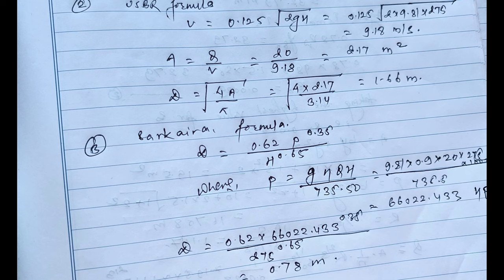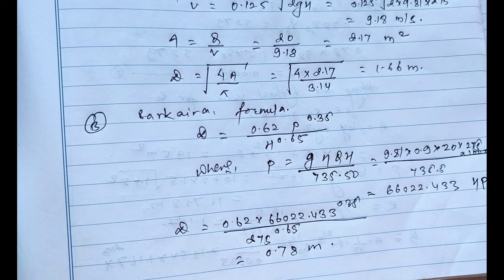So we calculated the economic diameter using different formulas like JNN guidelines, USBR formula, and Sarkaria formula where we get different values of D on different formulas. If you want to know more about the penstock, we have already created a video on the topic penstock. You can have a look on that video.